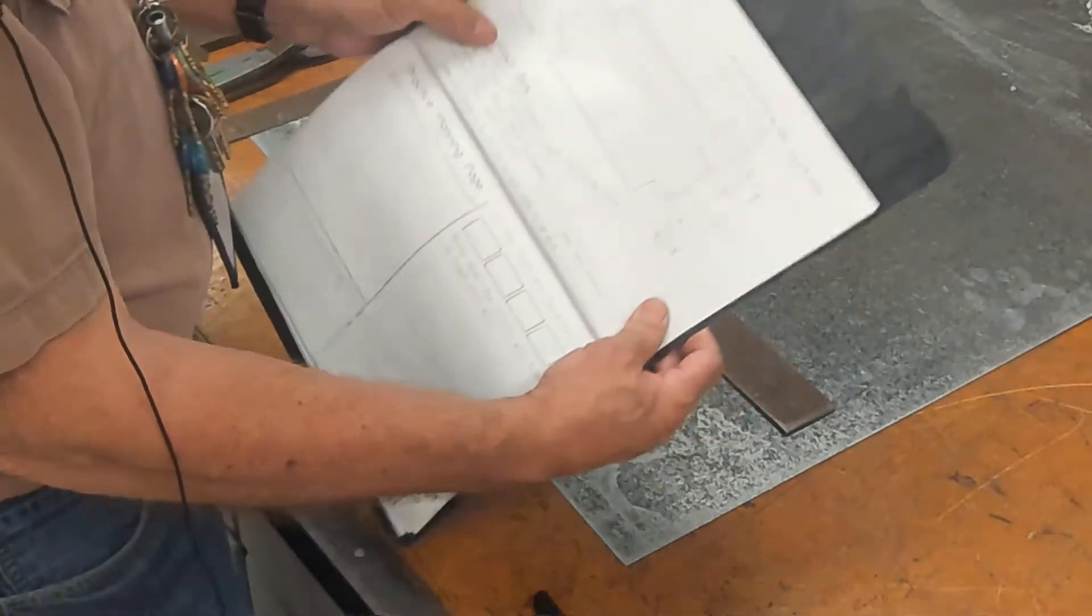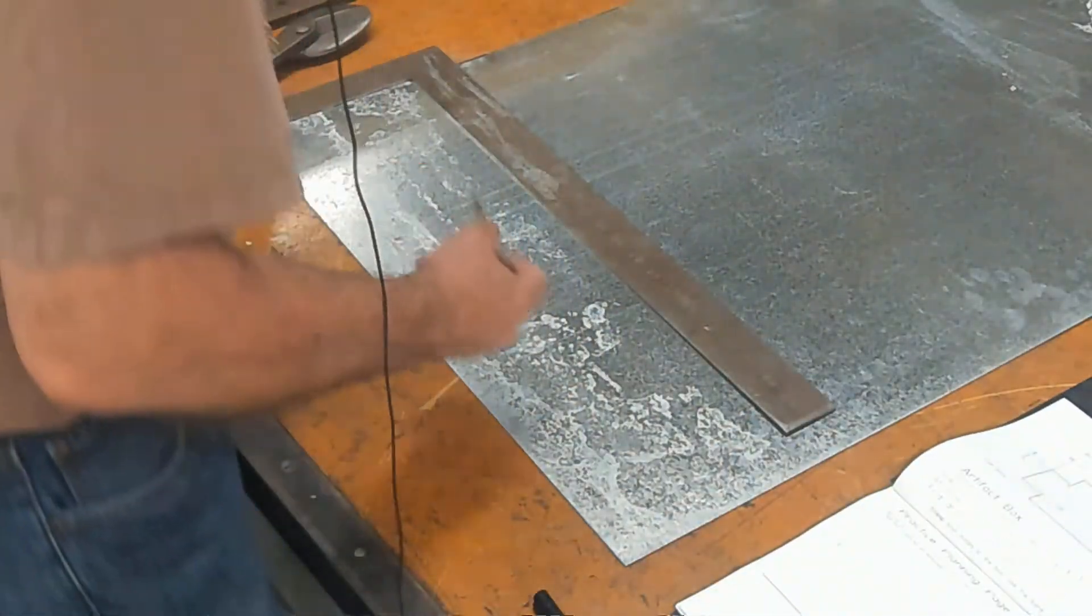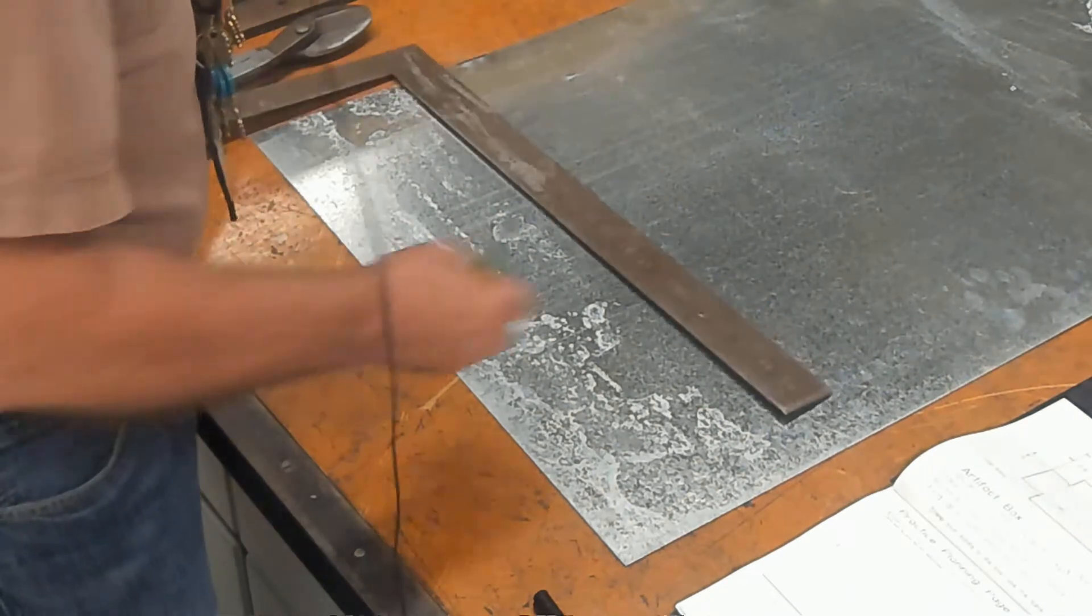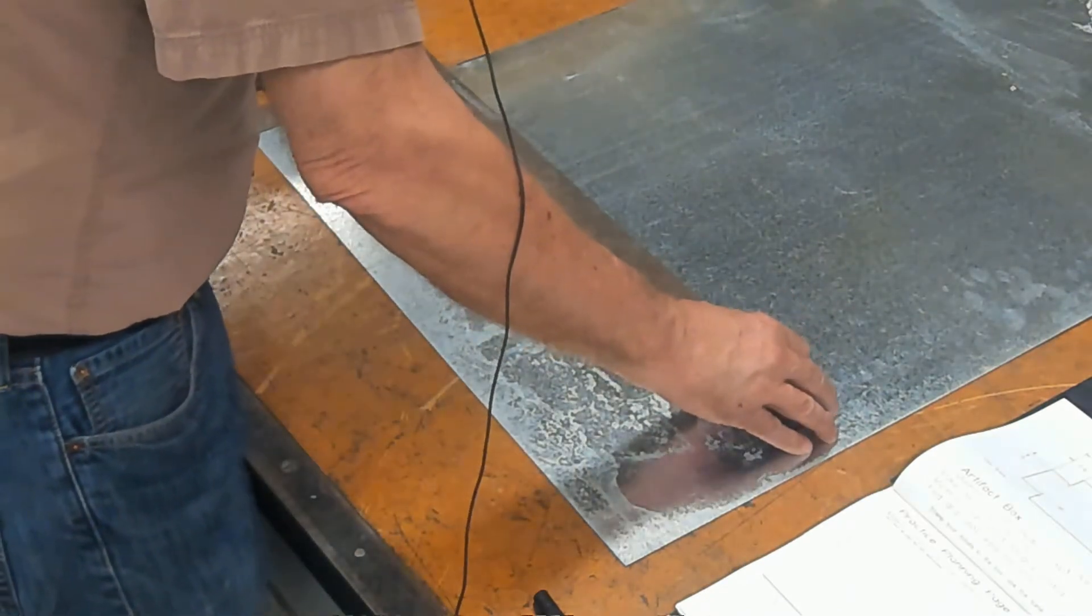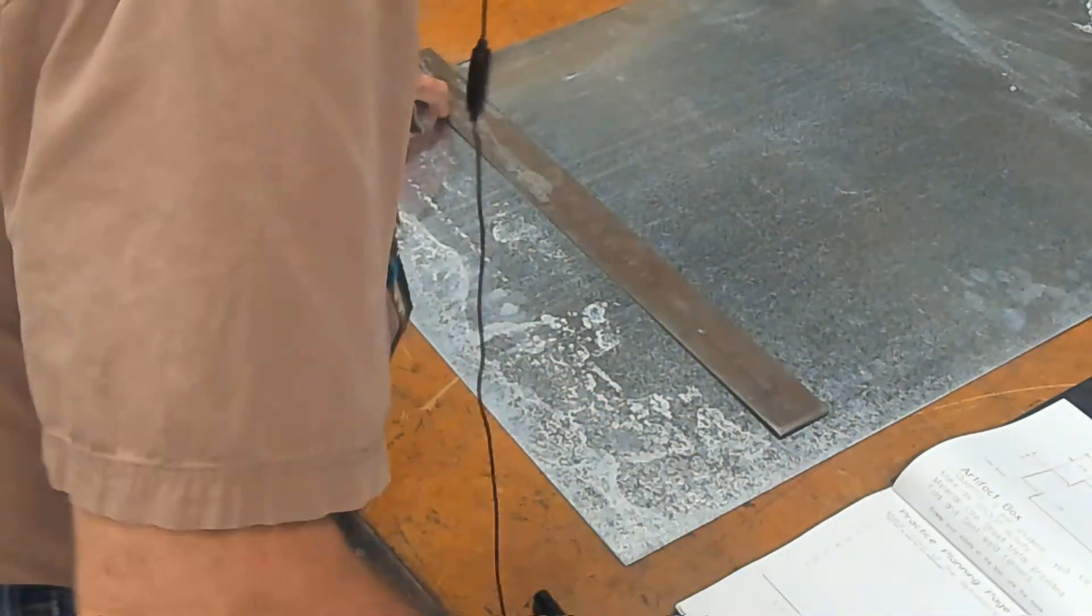For the sheet metal, you're gonna have a drawing, and we're gonna make a box. Just using a carpenter square, you can figure out the overall dimensions.